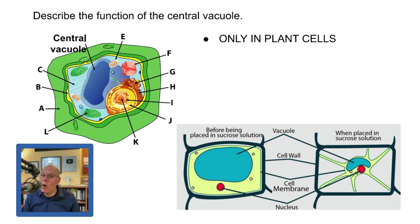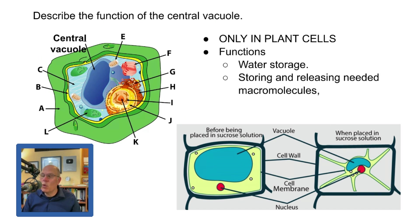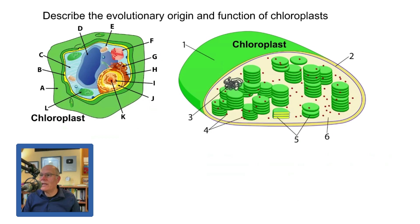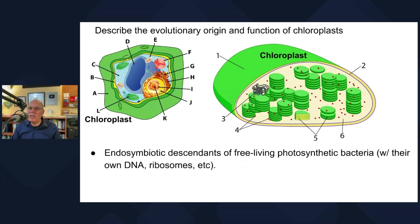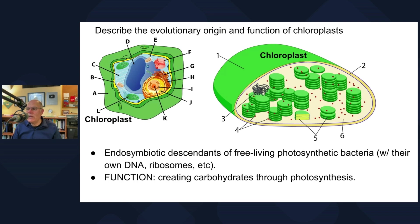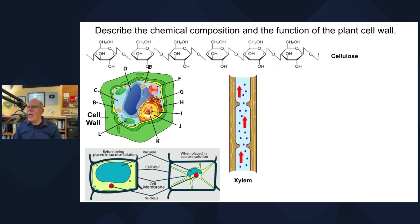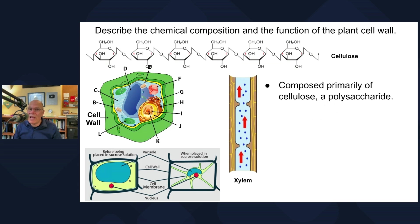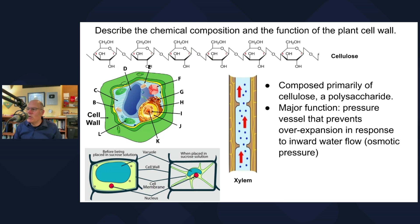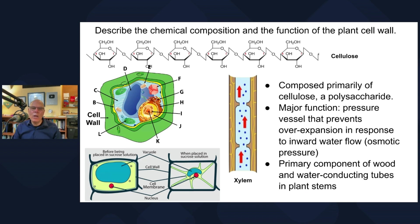The central vacuole is found only in plant cells. Its functions include water storage, storing and releasing needed molecules, and sequestering waste products. Chloroplasts were once free-living cells, just like mitochondria, and took up residence within an early eukaryotic cell. Their function is creating carbohydrates through photosynthesis. Plant cell walls are made of cellulose — a polysaccharide — and act as a pressure vessel that prevents over-expansion in response to osmotic pressure. Paper, wood, and cotton are all made of cellulose — one of the most important substances in our civilization.